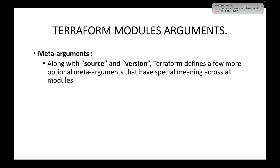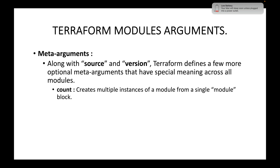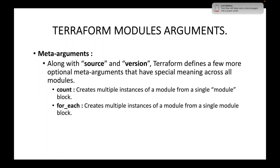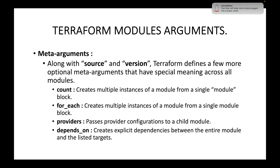Next we have the meta-arguments. Along with source and version, Terraform defines a few more optional meta-arguments with special meaning across all modules. We have count, which creates multiple instances of a module from a single module block with the same configuration; for_each, which also creates multiple instances from a module block; providers, which passes provider configurations to a child module to override the default provider configuration; and depends_on, which creates explicit dependencies between the entire module and the listed targets.